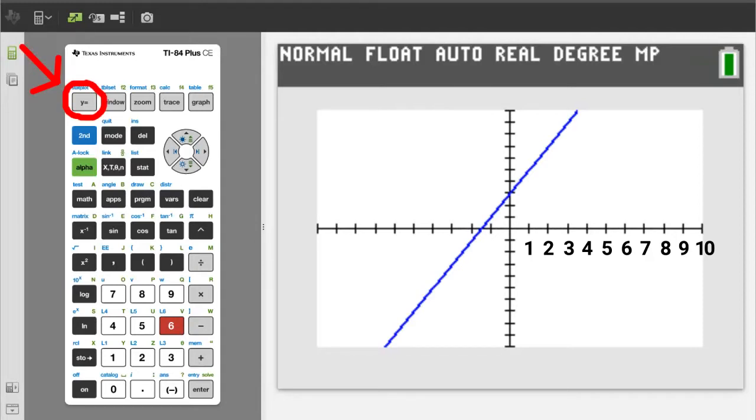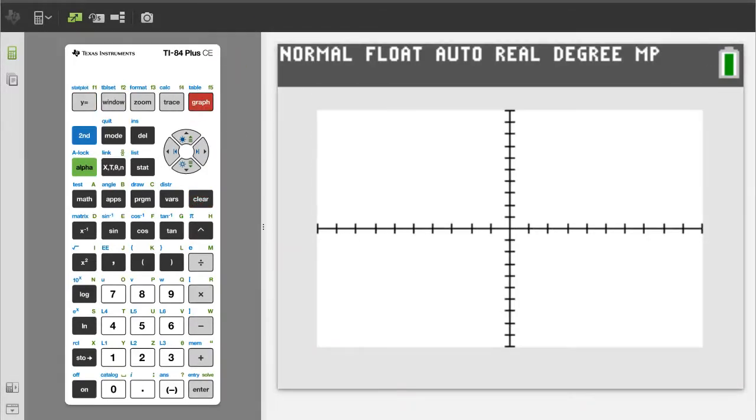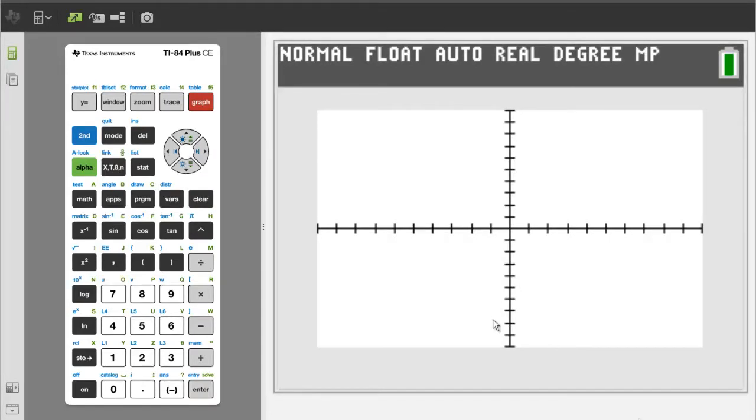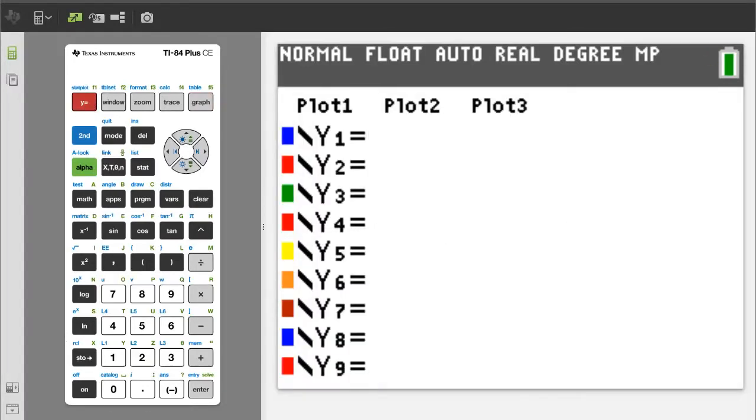Press the y equals button. If you have any previous equations here, clear them. To clear them, make sure that the blinking cursor is just after the equals sign. Then press the clear button. Now press the graph button. Our graph is ready. The first way to plot a piecewise function. Go back to the y equals button.